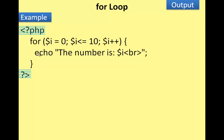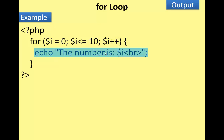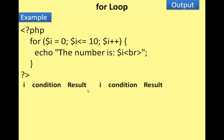Example problem using PHP code. Variables are declared, then an HTML tag is used. i equals zero, then condition i less than or equal to 10 is checked. i is incremented each iteration.